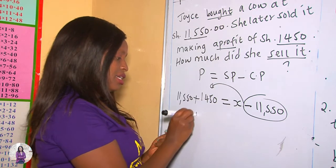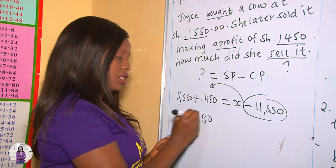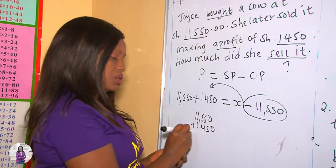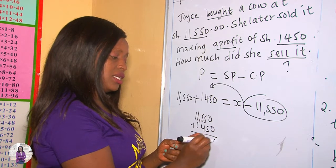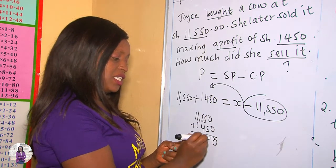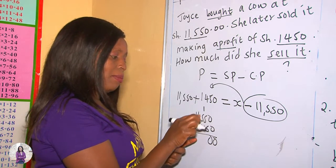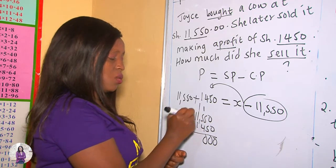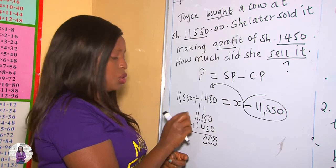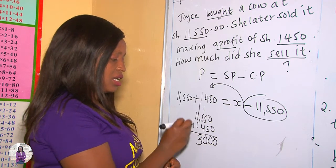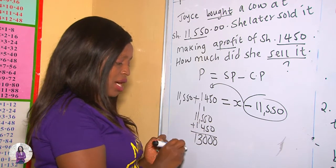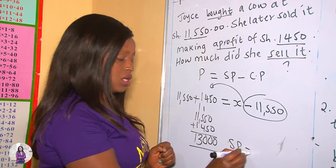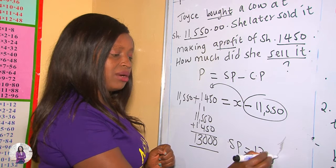Let's add 11,550 and 1,450 together: 0 plus 0 is 0, 5 plus 5 is 10 carry 1, 1 plus 5 is 6, 6 plus 4 is 10 carry 1, 1 plus 1 is 2, 2 plus 1 is 3, and 1 plus nothing is 1. Therefore, the selling price was 13,000 shillings.